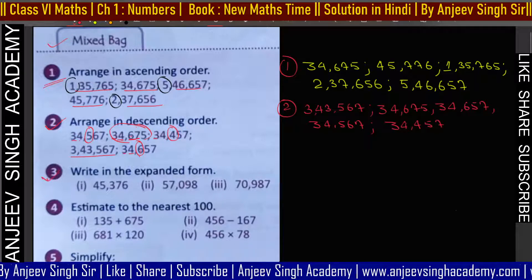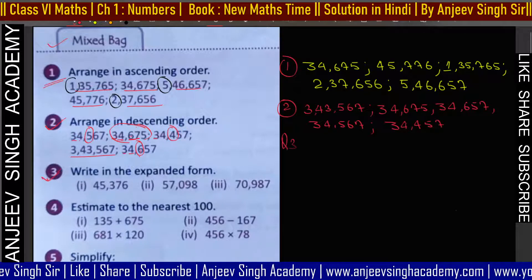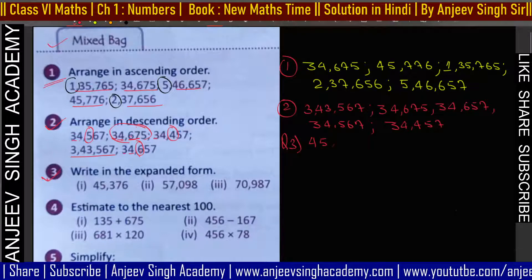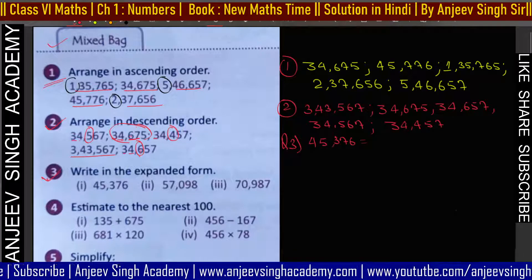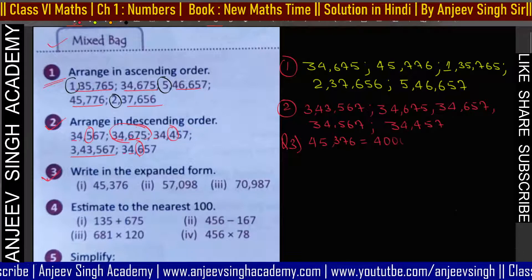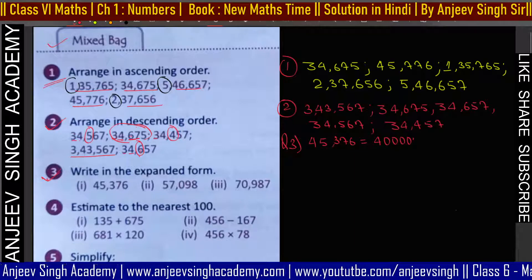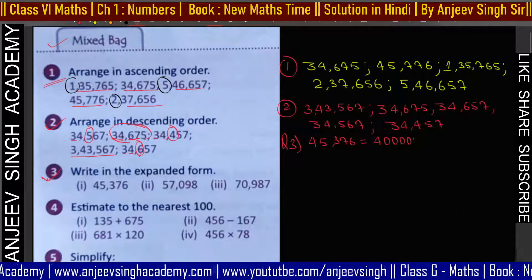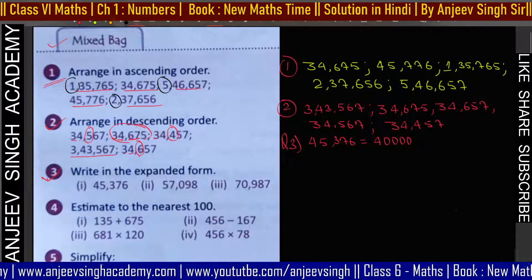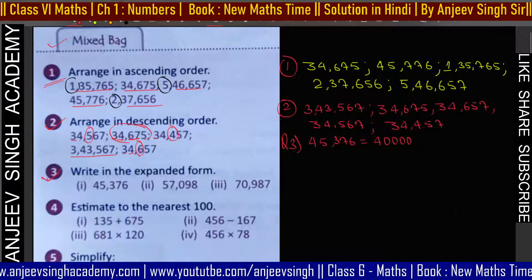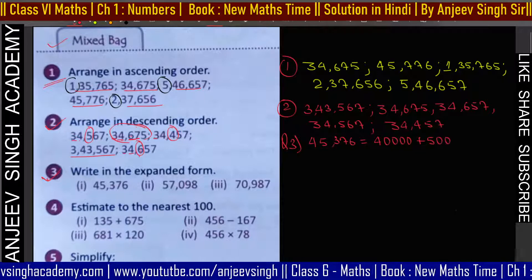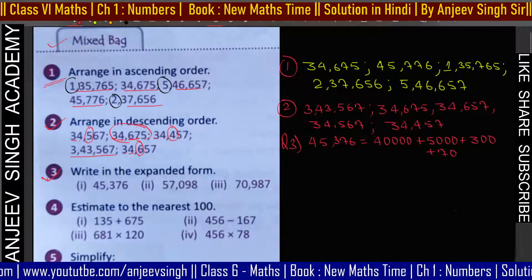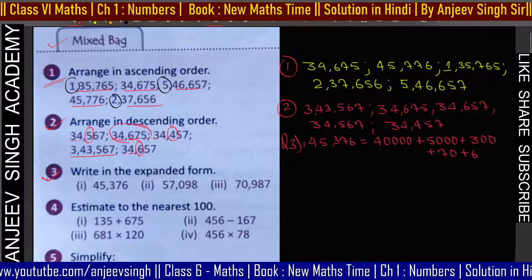Question number 3: expanded form में लिखना है। पहला question है 45,376। इसको expanded form में लिखेंगे: 40,000 plus 5,000 plus 300 plus 70 plus 6। यह पहले question का answer होगा।